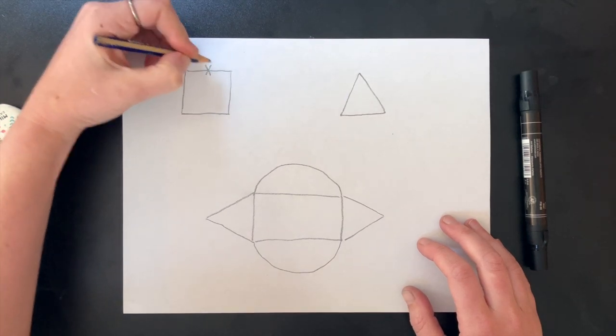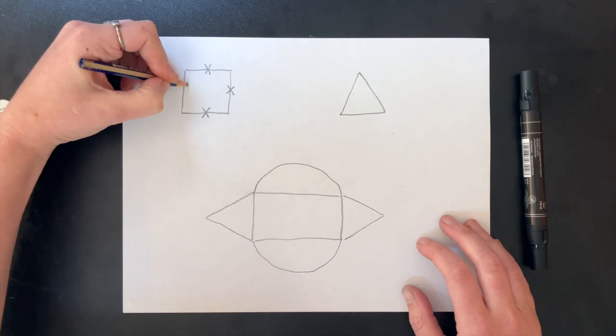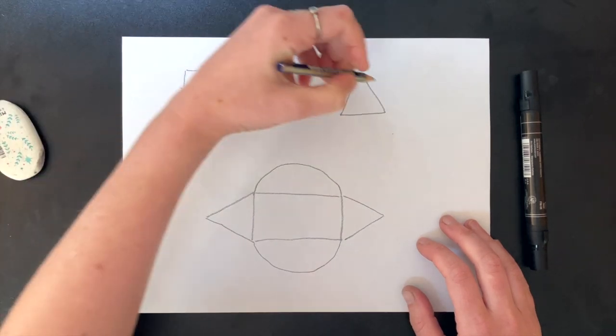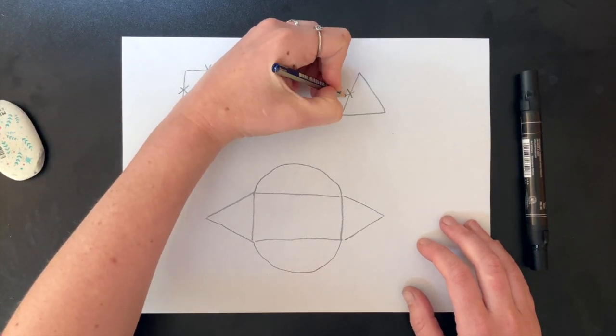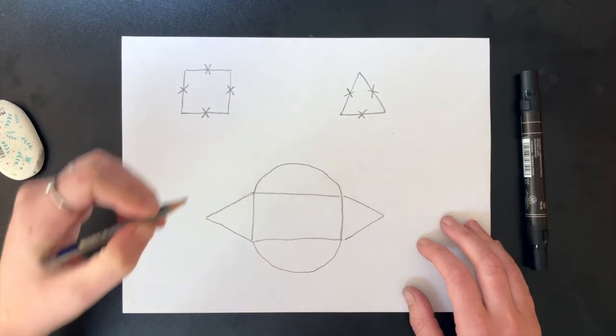Now go ahead and draw an X in the middle of each side of each shape. Ideally, you want all of the sides of your shape to be about the same length. This just helps with the spacing of your knot.